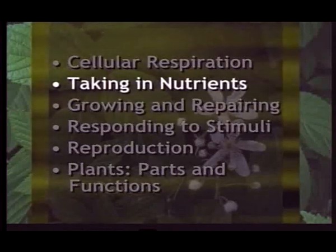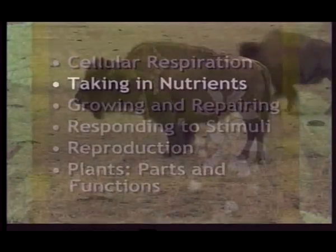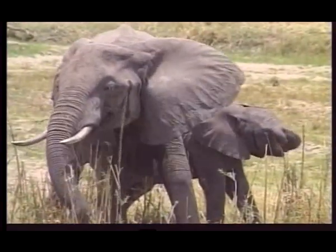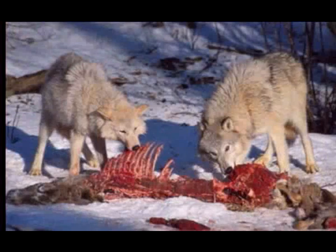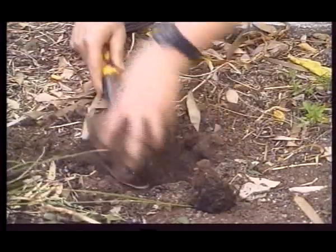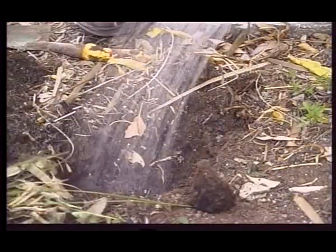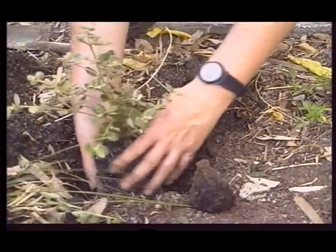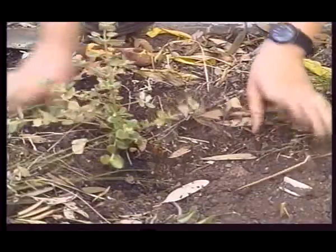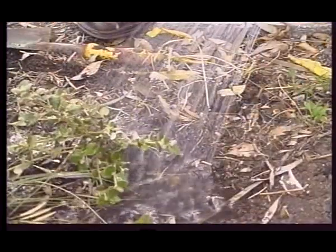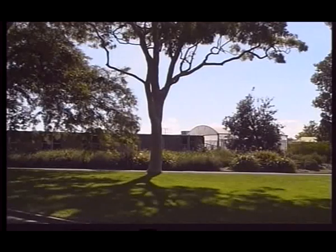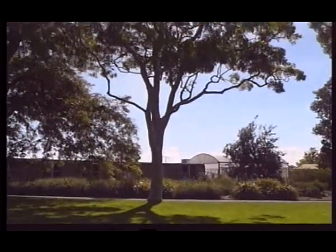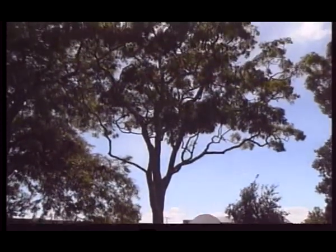Living things take nutrients from their environment. For instance, animals take in nutrients by eating and digesting plants and other animals. Plants take in nutrients too. They get minerals from the soil or medium they are grown in. The minerals are dissolved in water and are drawn into a plant through its root system. Plants transport nutrients, oxygen, and water throughout their roots, stems, and leaves.